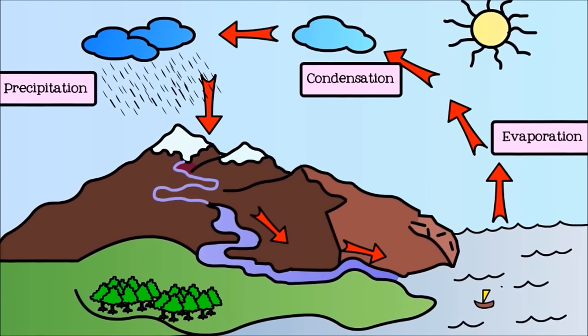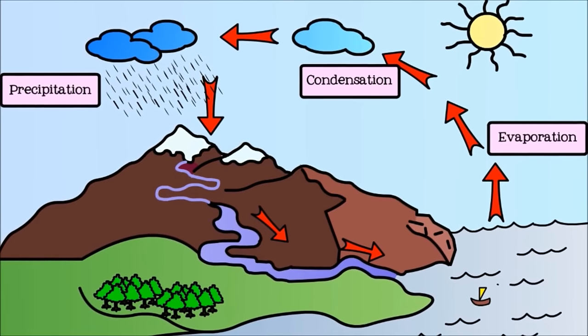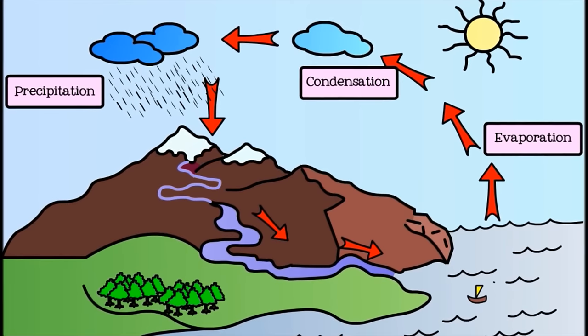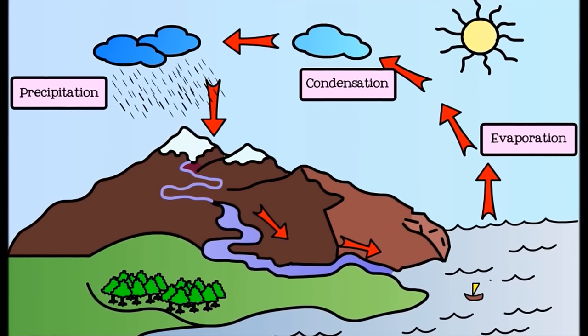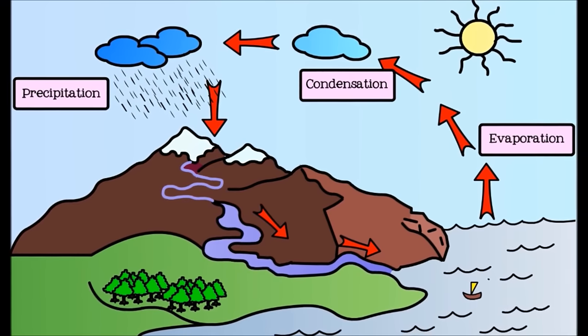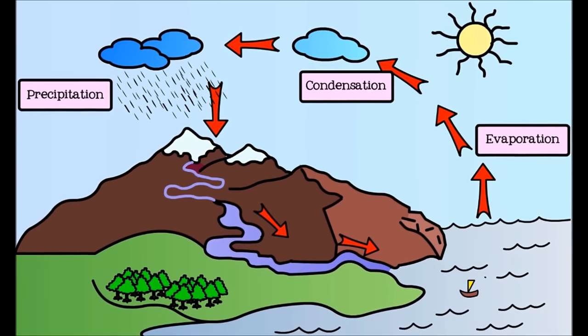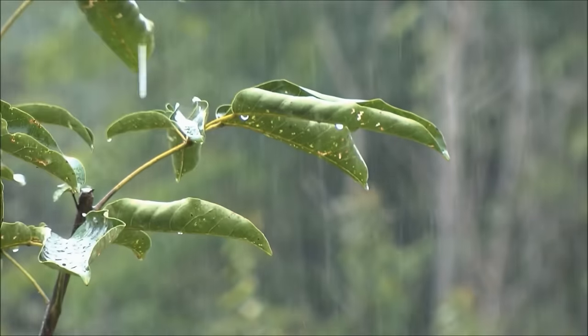As tiny water droplets, they remain suspended in the air, but the water droplets soon join together into larger, heavier droplets and become too heavy to stay in the air. When this happens, precipitation will fall.